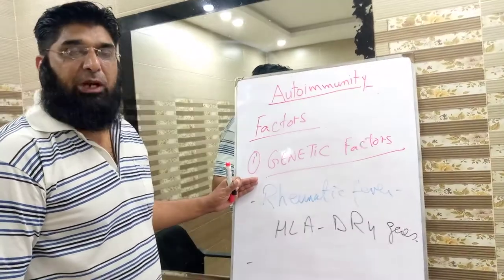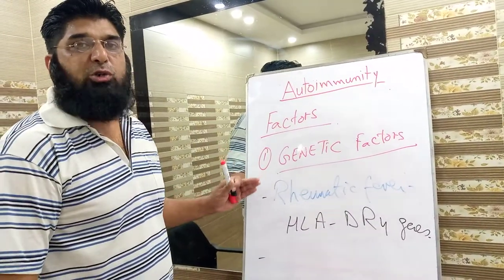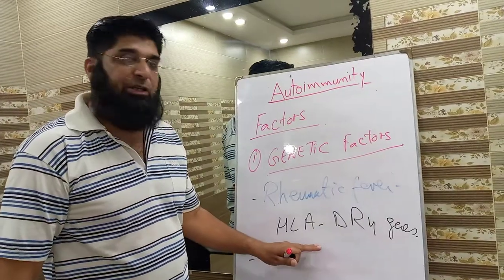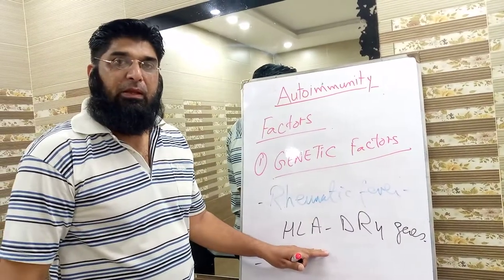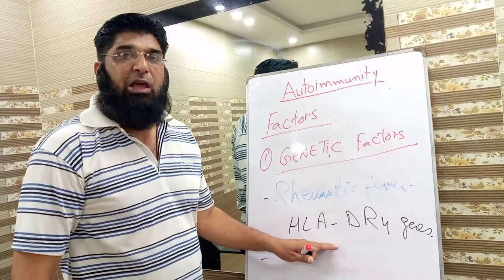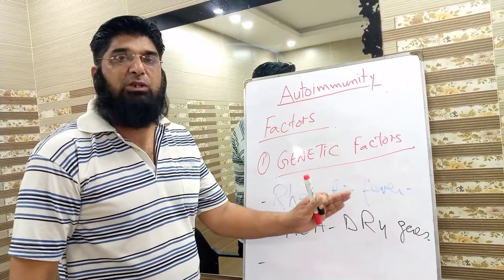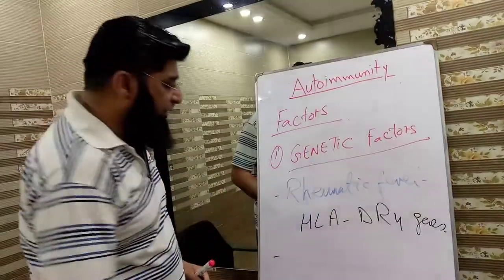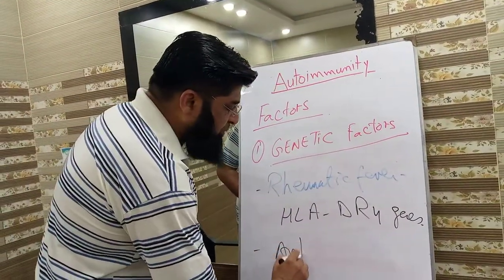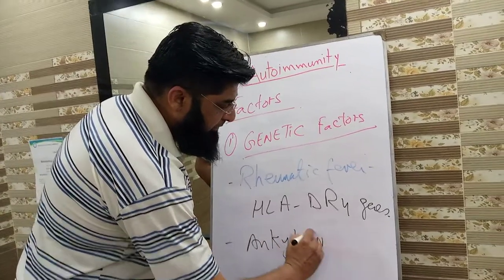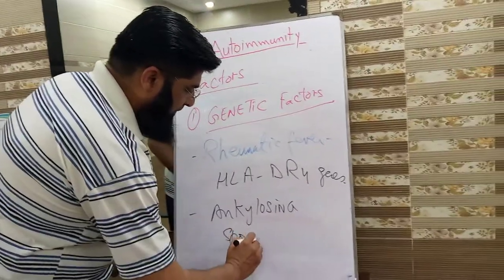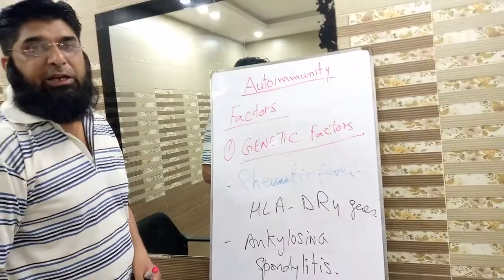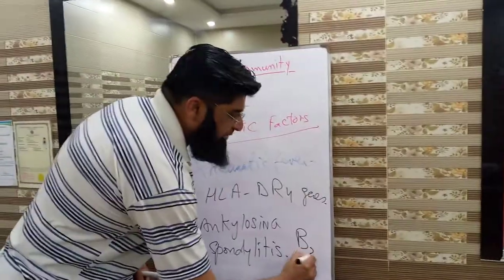This genetic predisposition is because of the relation of HLA antigens — human leukocyte antigens — with class 1 or class 2 MHC genes. Another example is ankylosing spondylitis, which is associated with the B27 gene.